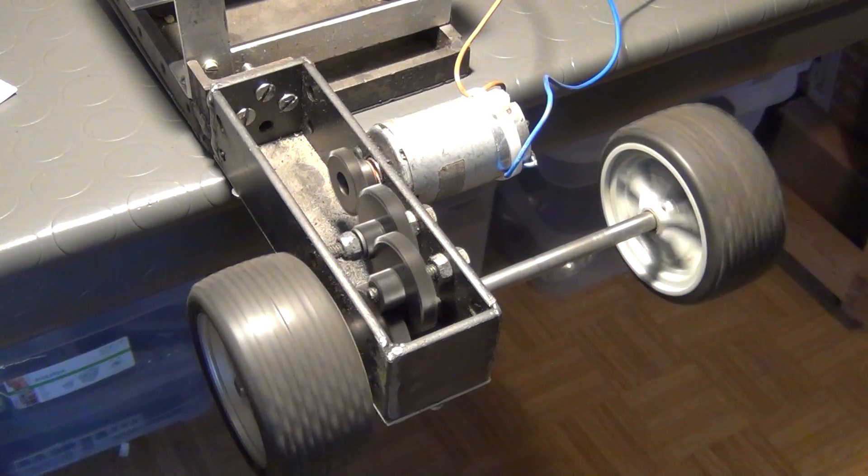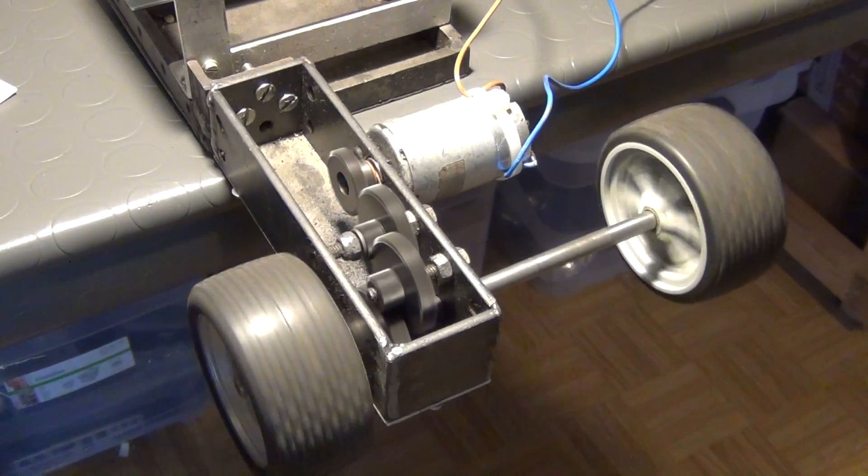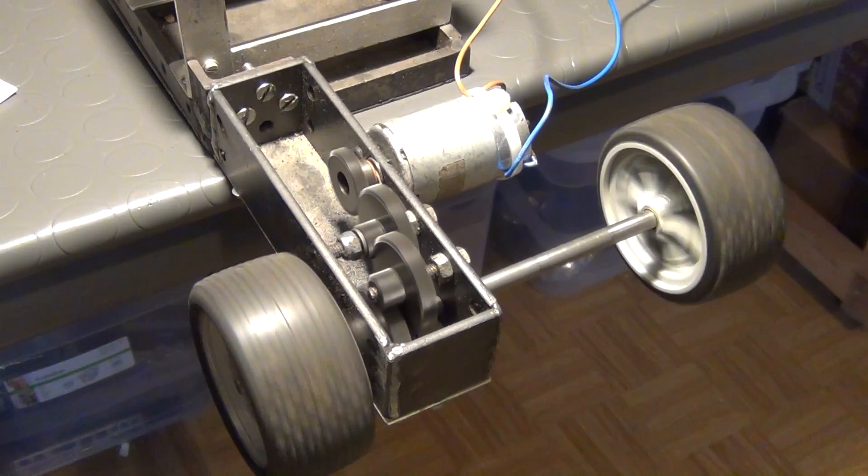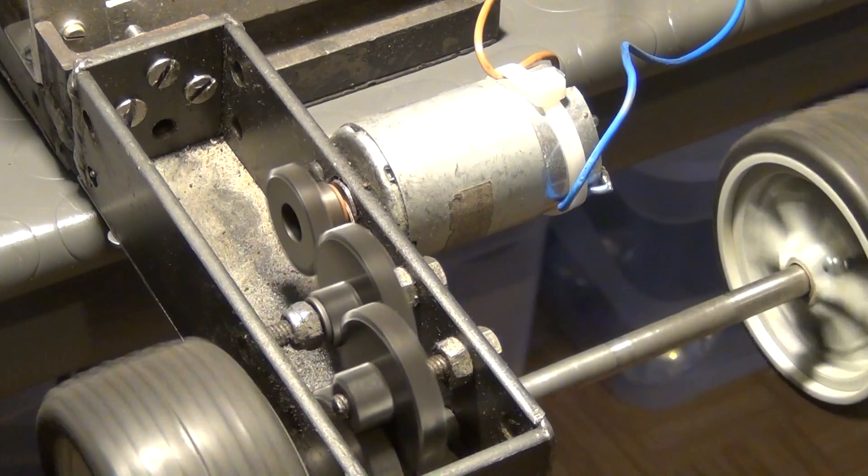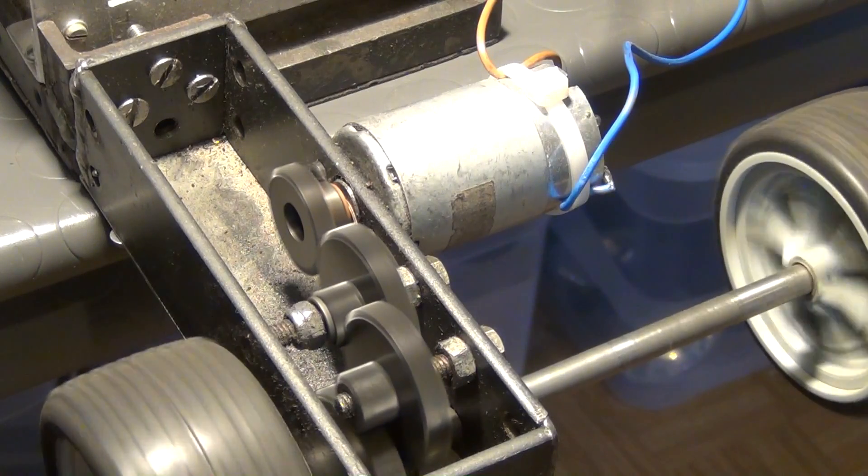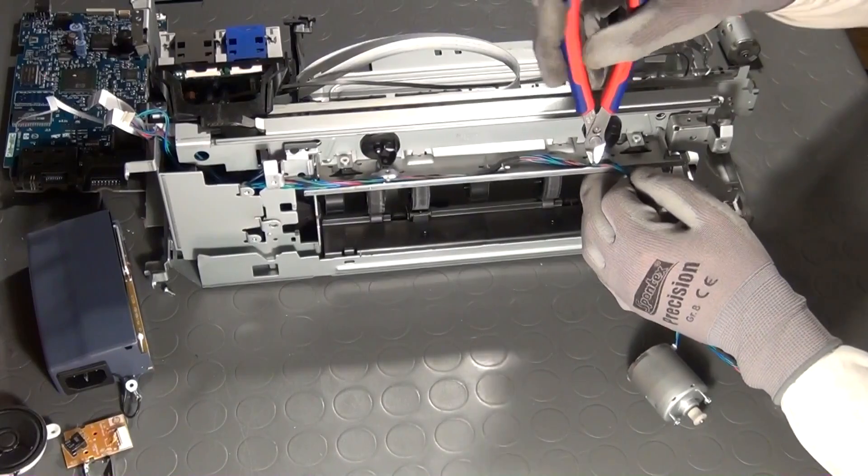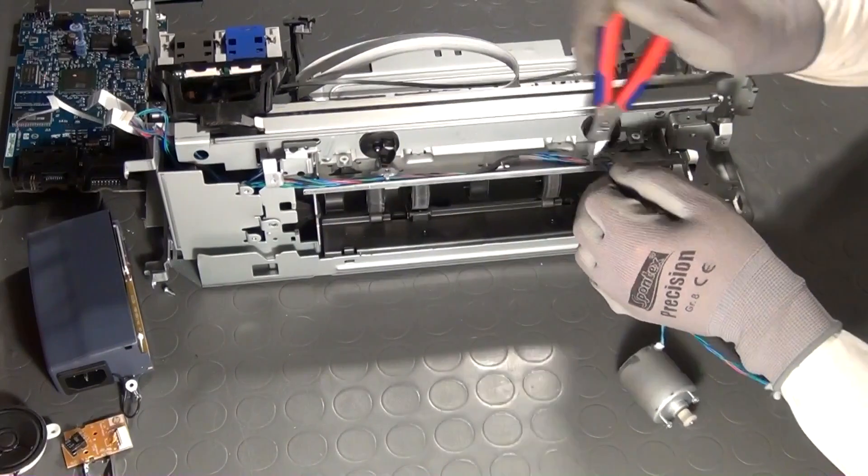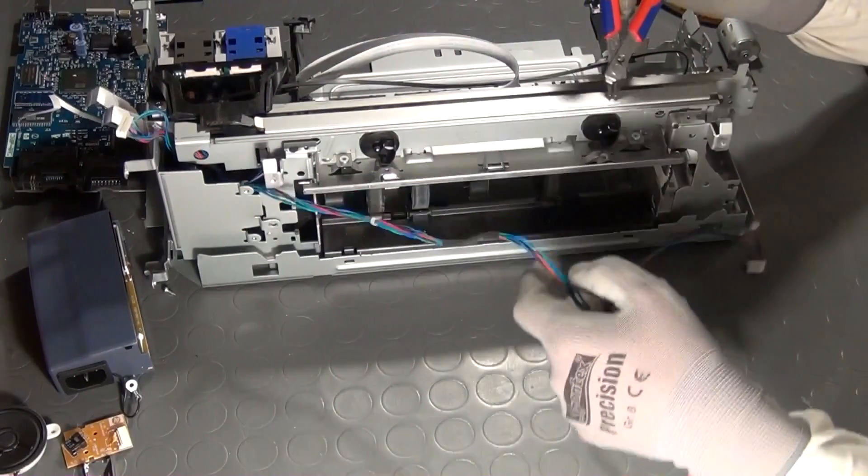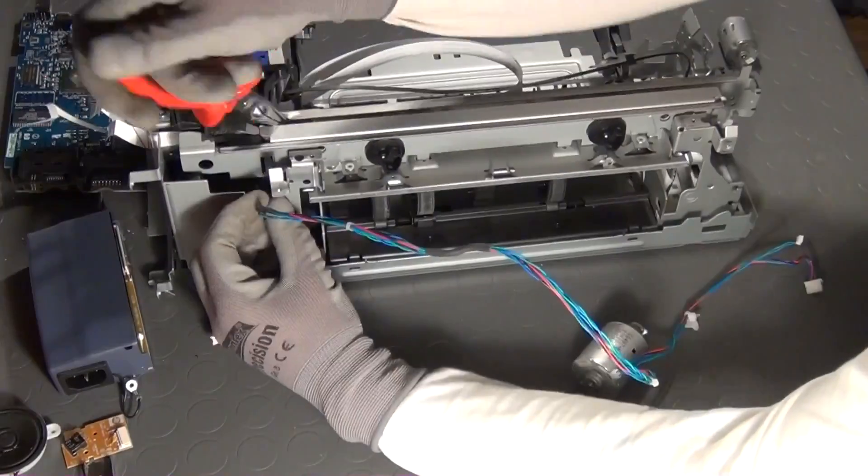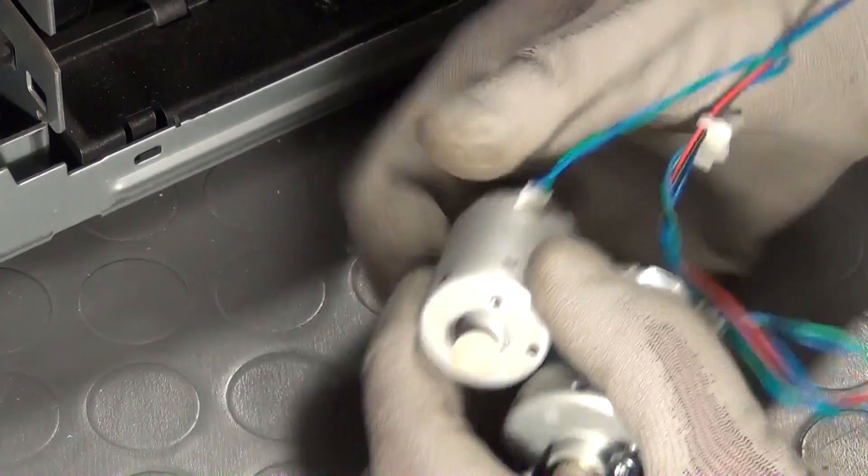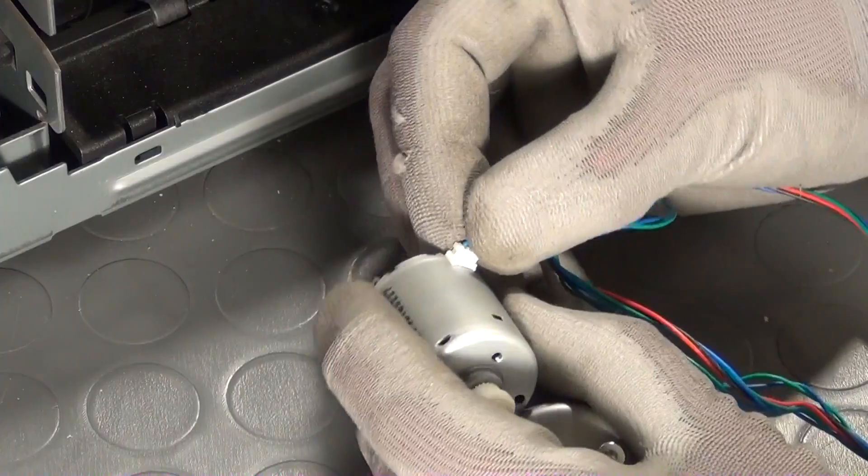This bigger DC motor can for example be reused for the drive of an RC car or a smaller robot, as I did in an earlier project, but more about this in part 2. When, as in this case, the motors have no soldering tags but these little white jacks, it is important to salvage the cable harness too, because it already comes with the fitting connectors.